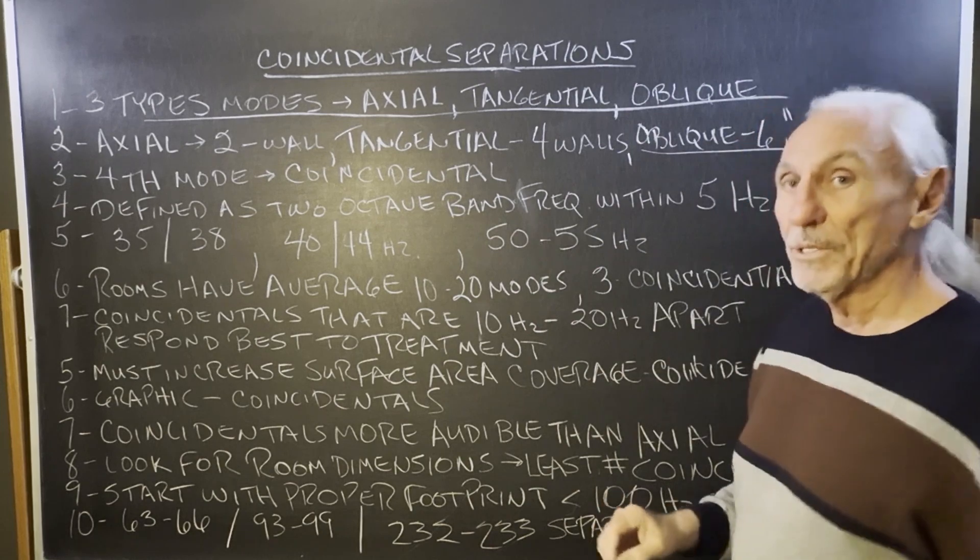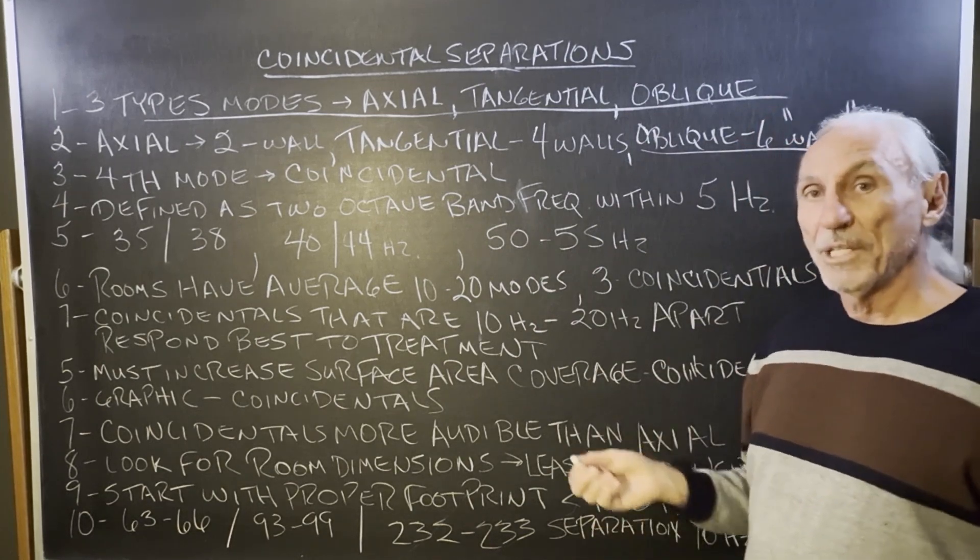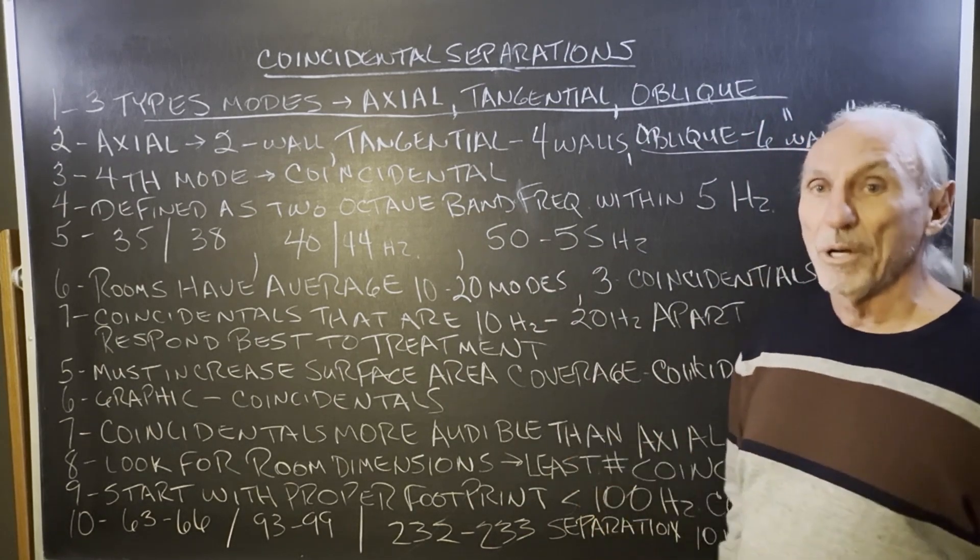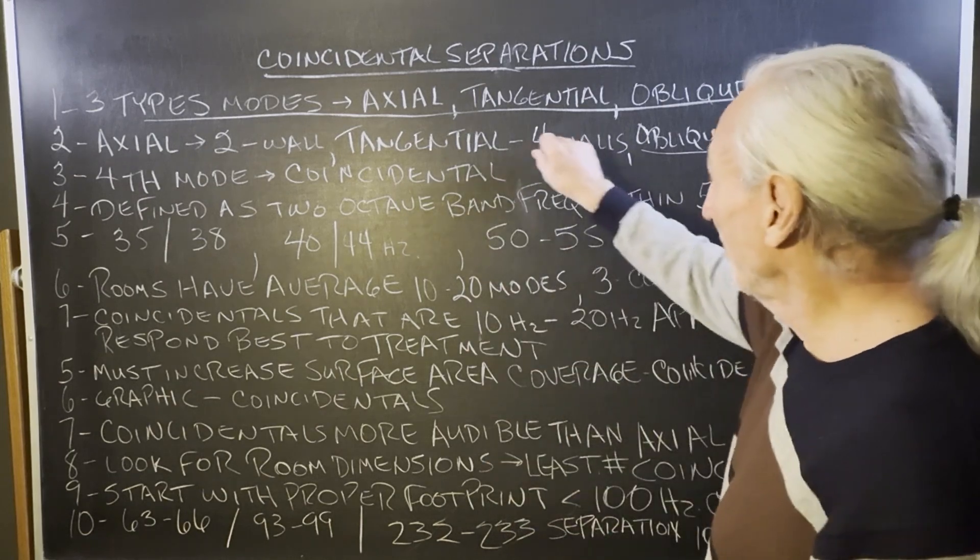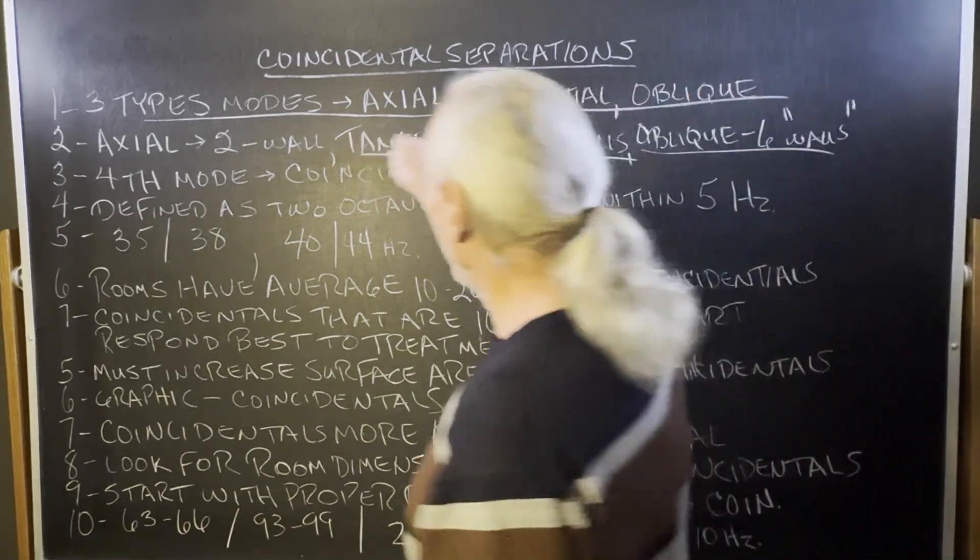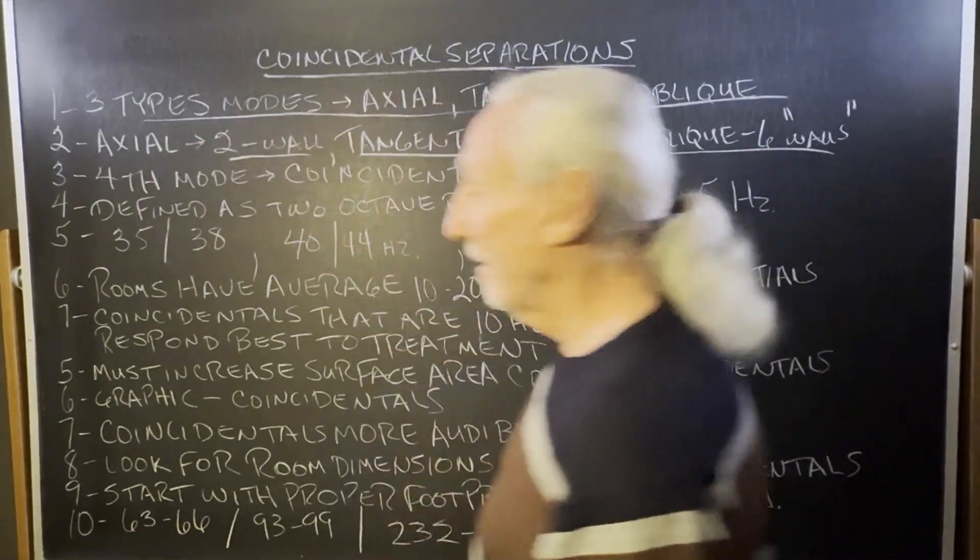And then the oblique are six surfaces. So we have six surfaces in a room, right? Floor, ceiling, and the four walls. So all kinds of pressure, all kinds of names, and all kinds of places.